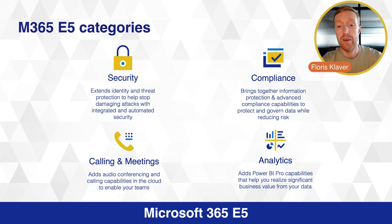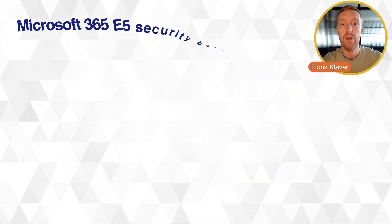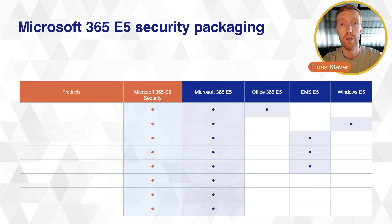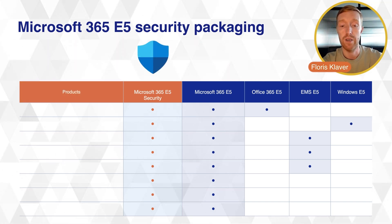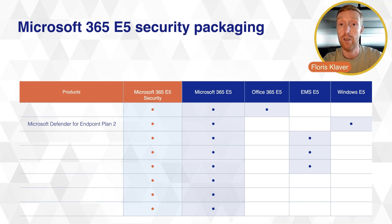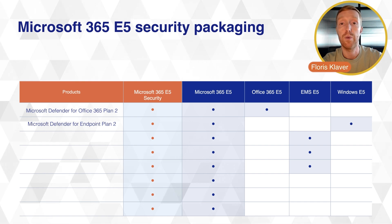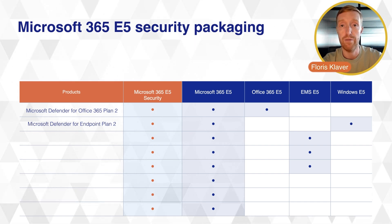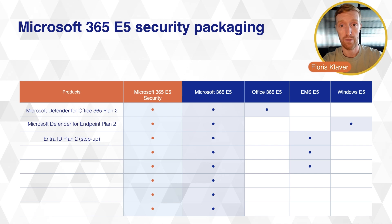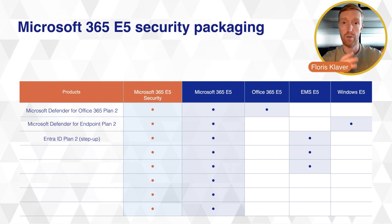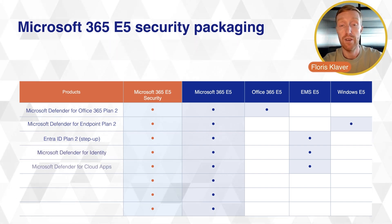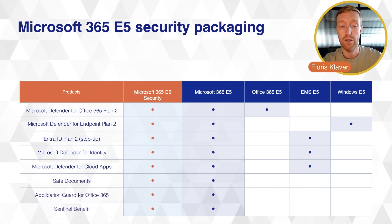Looking at Microsoft 365 E5 security, there are a lot of products included. In the first column you can already see the full Microsoft 365 E5 security suite. You have Defender for Endpoint to secure your local endpoint devices, Defender for Office 365 to secure your Office 365 environment including Teams and Exchange Online, Entra ID Plan 2 which adds an automation layer on top of Plan 1 for identity management, Defender for Identities to secure specific identities, and Defender for Cloud Apps to help against shadow IT.